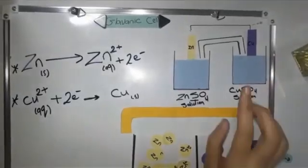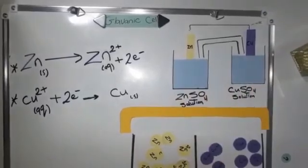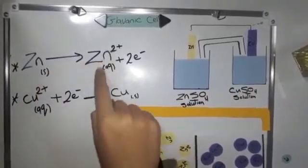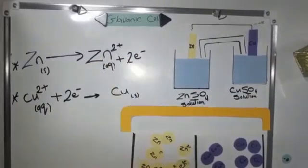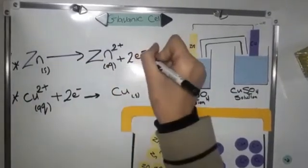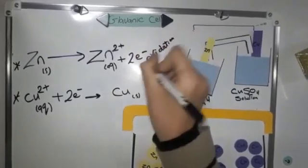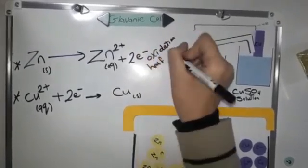To know more about the reactions that happen in galvanic cell, we see that zinc solid turns to zinc ion and lose two electrons. And this is called oxidation of the reaction.